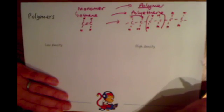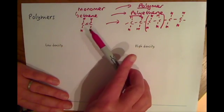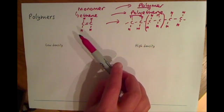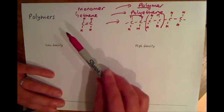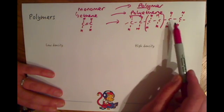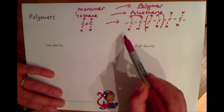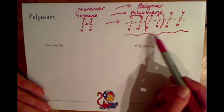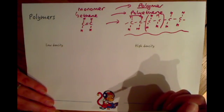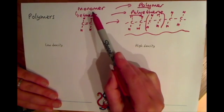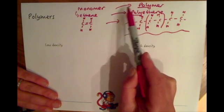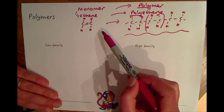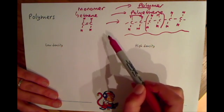For the C2 topic you don't need to know too much about this process, as it was covered in C1 — this is just a recap. Instead of drawing all the carbons and hydrogens, I'm going to represent polymers as wiggly lines for C2. Now, if we change the conditions during polymerization, we can make different plastics or different polymers.